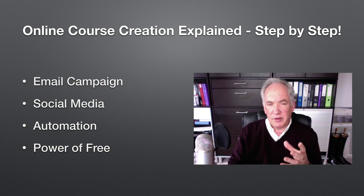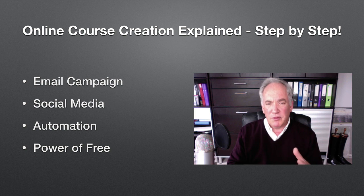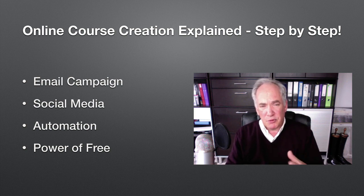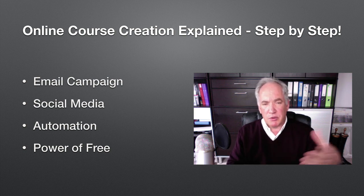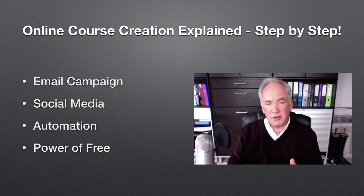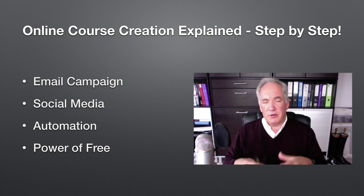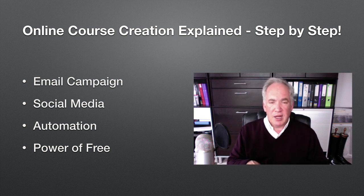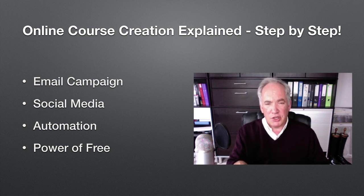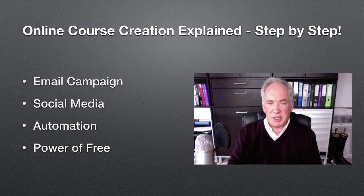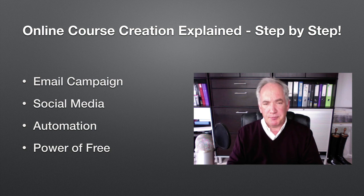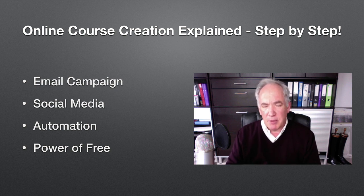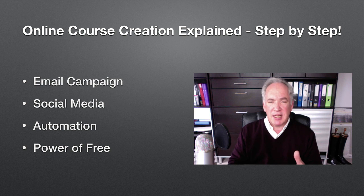Automation is important because there's a limit to how much you can do, and the more you can set on automation the better. This means setting up automatic emails, but you can also schedule social media content ahead of time. If I want a week's worth of tweets, I can get them done in a batch, set them on a scheduler, and not worry about them anymore. That automation saves time. And don't forget the power of free — it's really important to accept the principle of paying forward and being prepared to give things for free before you ask people for money.